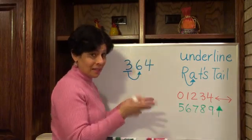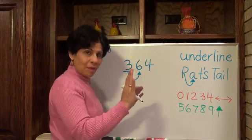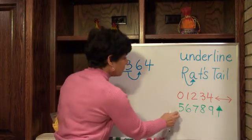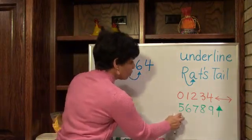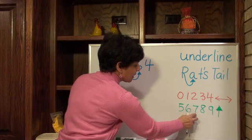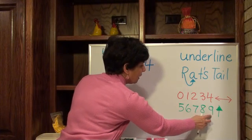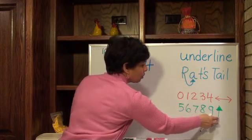Okay, and they're kind of like the smaller numbers and they're in red. So that means stop, don't go up. But if the rat's tail goes to a 5, a 6, a 7, 8, or 9, then the underlined number goes up.